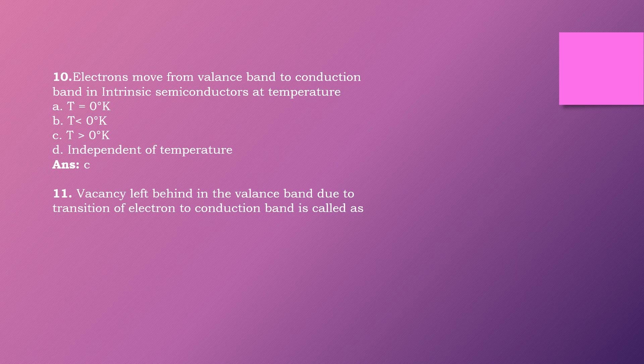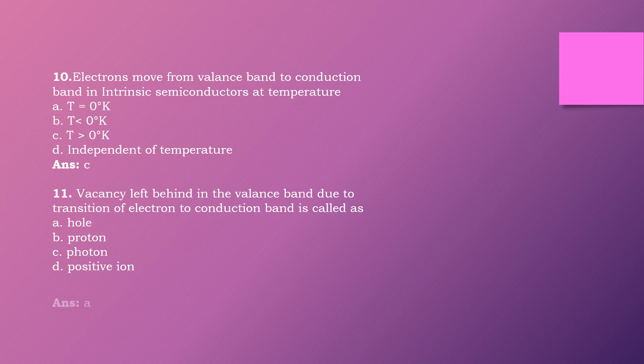Question eleven: The vacancy left behind in the valence band due to the transition of an electron to the conduction band is called as dash. Options are: hole, proton, photon, positive ion. The right answer is option A: hole.